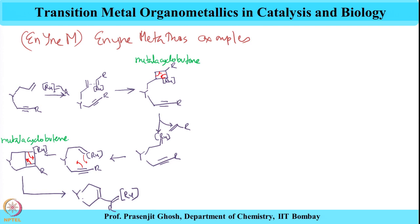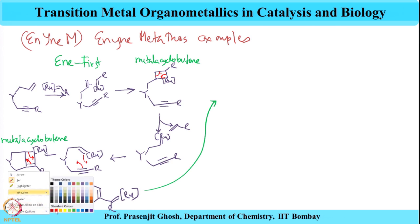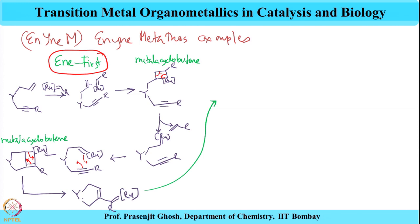Once these are formed, the first path is about the inverse — the metathesis happening on the olefin is the first pathway, the inverse. Then the second pathway is where metathesis of the alkyne would happen, and for that this species enters into a second cycle as is shown here.